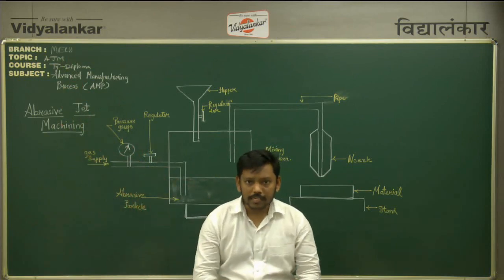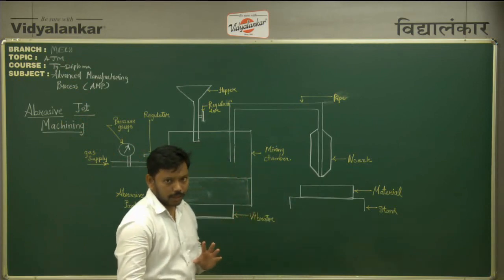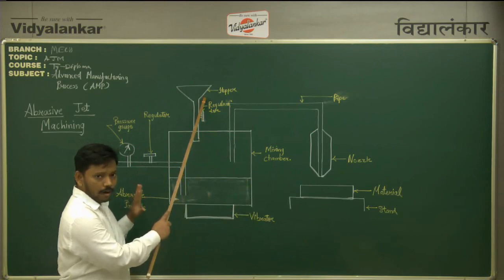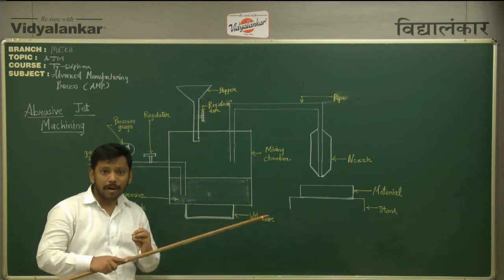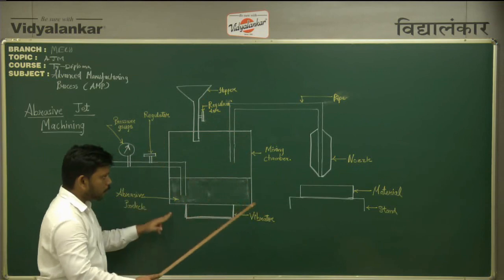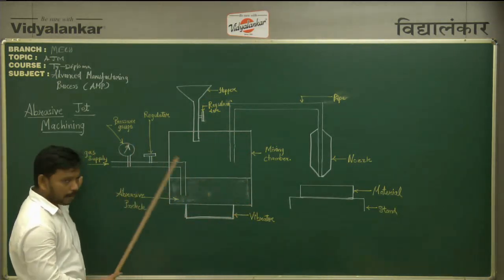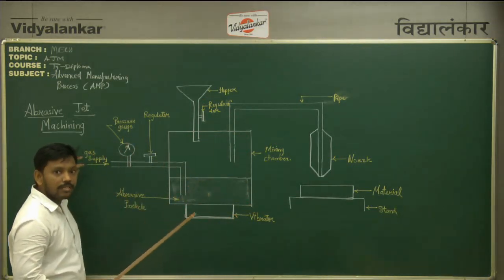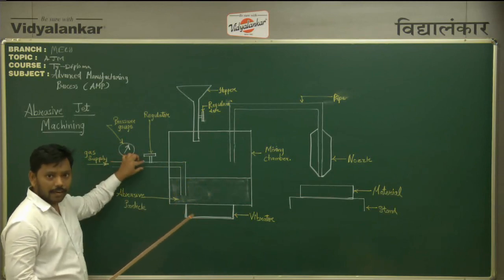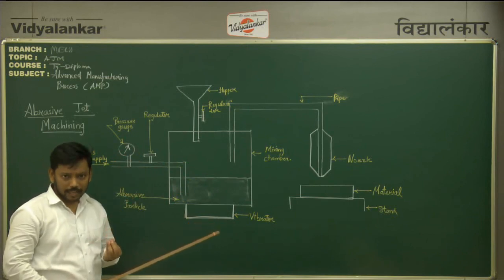To understand this particular topic, let us look at the components of the machine first. The components are very simple. We have a hopper in which some amount of abrasive particles are stored. Then we have a rectangular box which is called as mixing chamber. Then we have a pipeline through which we supply high pressurized gases, along with a pressure gauge and a regulator to regulate certain parameters of this gas.